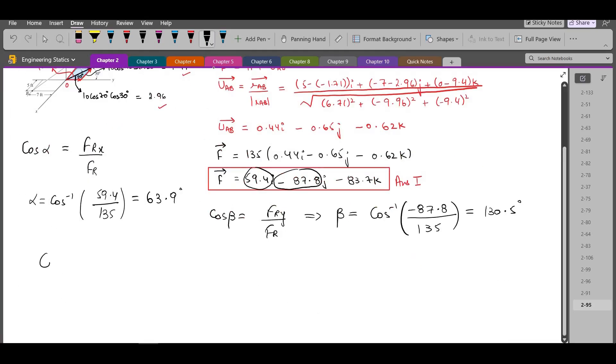Now for the cos gamma. Cos gamma is FRz over FR. So gamma becomes cos inverse of negative 83.7 over 125. So from here gamma comes out to be 128.3 degrees. So these are our other answers.